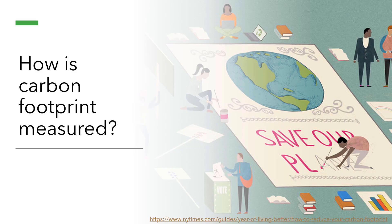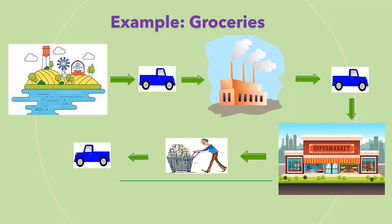How is carbon footprint measured? A lot of factors are taken into consideration when calculating your carbon footprint. Let's take the grocery store as an example. First, it starts in the farm, where the equipment used and processed releases greenhouse gases. Then, the truck transports the goods to a factory, which uses up fuel. Fuel is the primary source of greenhouse gases.